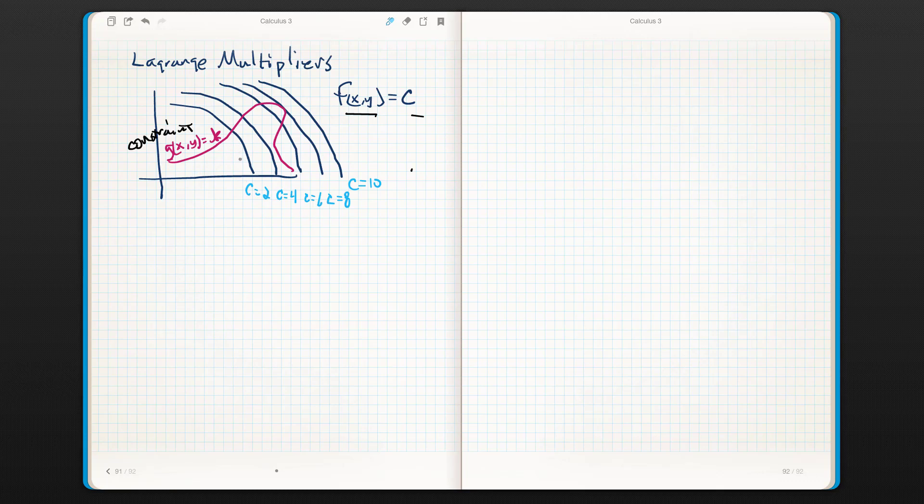We're trying to optimize the value of the function given this constraint. So we would think that the candidates for that optimization would be wherever they intersected. So they intersect here, they intersect here, they intersect here, here, and here. Now that's a special spot, and we'll talk about why that is.